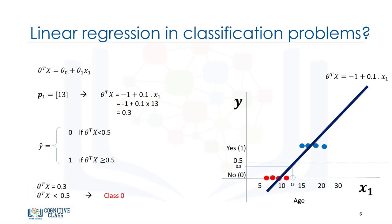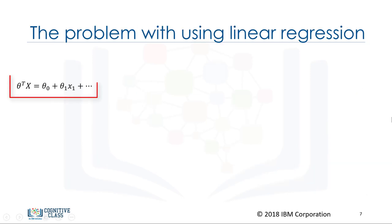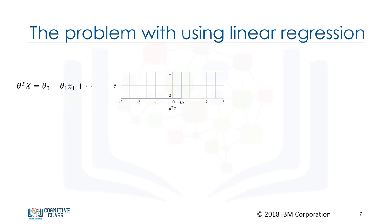But there is one problem here: what is the probability that this customer belongs to class 0? It's not the best model to solve this problem. There are some other issues which verify that linear regression is not the proper method for classification problems. If we use the regression line to calculate the class of a point, it always returns a number such as 3 or negative 2. Then we should use a threshold, for example 0.5, to assign that point to either class 0 or 1. This threshold works as a step function that outputs 0 or 1 regardless of how big, small, positive, or negative the input is.